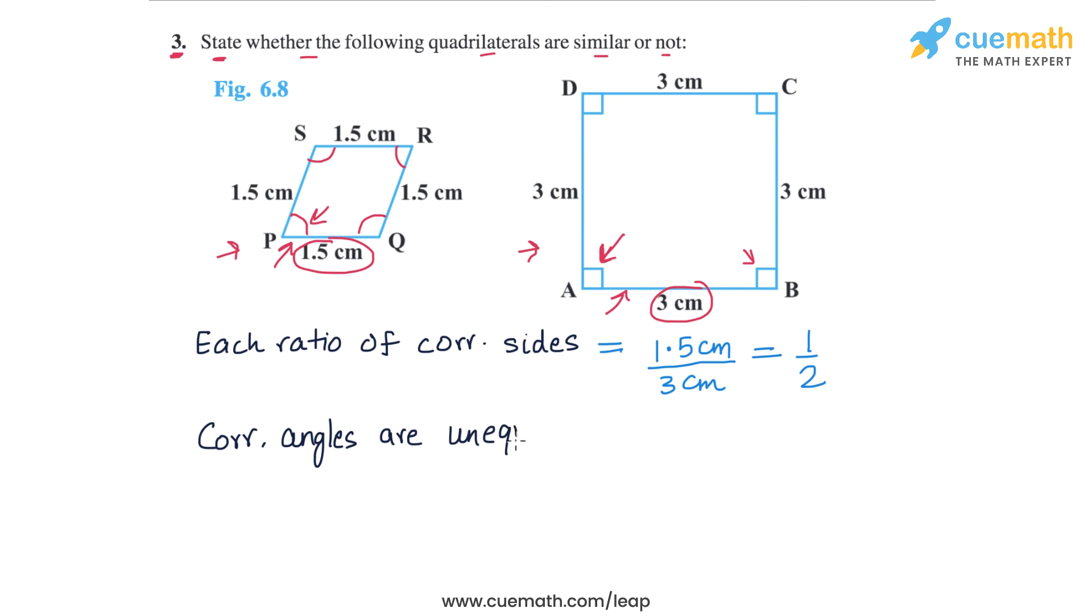But for two shapes to be similar, the corresponding angles must be equal. And therefore, we can say that these two quadrilaterals are not similar.